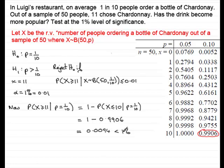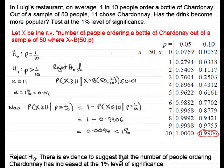So what we will conclude from this is that, and you need to write this down, is that we're going to reject Ho. We're going to say that there is evidence to suggest that the number of people ordering Chardonnay has increased at the 1% level of significance.